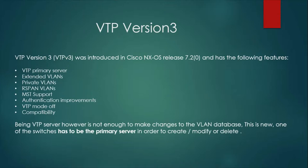In transparent mode, a switch would receive VTP advertisements and forward them to other switches — so it was still participating in VTP forwarding even though it wasn't exchanging VLAN database information. In off mode, the switch completely stops forwarding VTP advertisements, fully isolating it from the VTP domain.